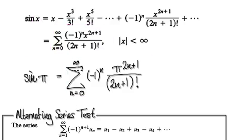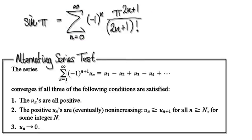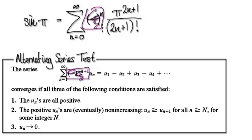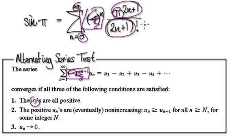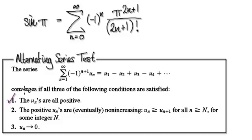We need to check that it's an alternating series. For the alternating series test, you need to check these three conditions. First, discard the alternating component and make sure all the u_n's are positive. This is a constant to the power of n — don't forget n is moving from zero to infinity — so this will always be positive, therefore the whole thing will always be positive. So that condition has been satisfied.